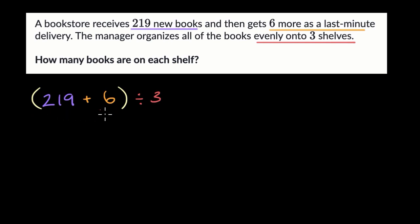So what's 219 plus six? We might be able to do that in our head. What's 19 plus six? Well, 19 plus one is 20 and then you have five left. So it's going to be 25. So 219 plus six is 225.